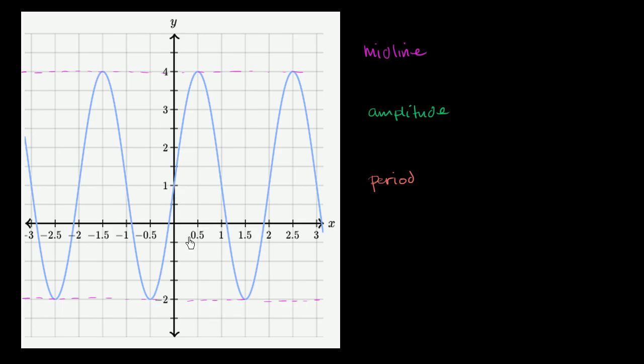So the midline is going to be the horizontal line y is equal to 4 plus negative 2 over 2. Just literally the mean, the arithmetic mean between 4 and negative 2, the average of 4 and negative 2, which is just going to be equal to 1.